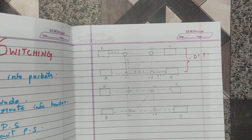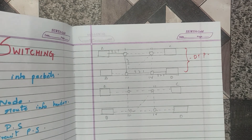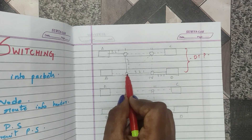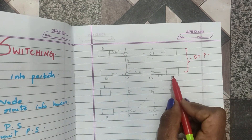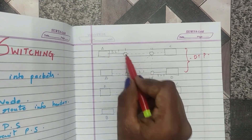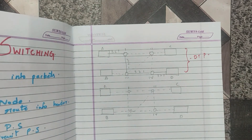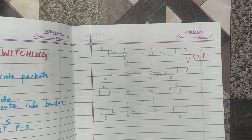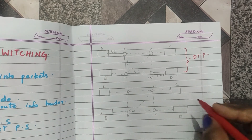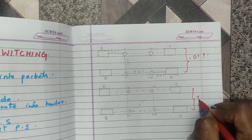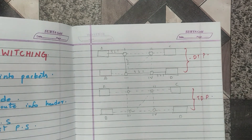In the data transfer phase, resources are allocated during setup — similar to circuit-switched networks, unlike datagram networks. All packets of the message follow the same path from source to destination. After data transfer is complete, the connection is released in what is called the teardown phase.